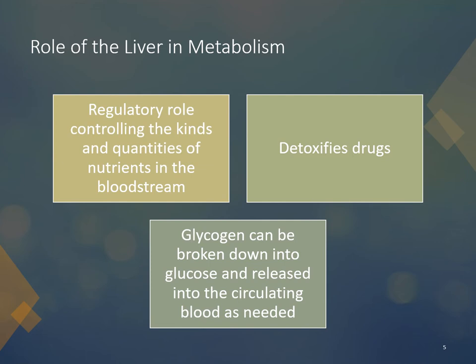The liver is always checking whether we need more glucose, more vitamins, or more amino acids — it's constantly keeping tabs on the bloodstream's stock. Other end products of digestion may be oxidized to provide energy, converted to glucose, protein, fat, or other substances, or released to circulate at prescribed levels in the blood for use by all cells.